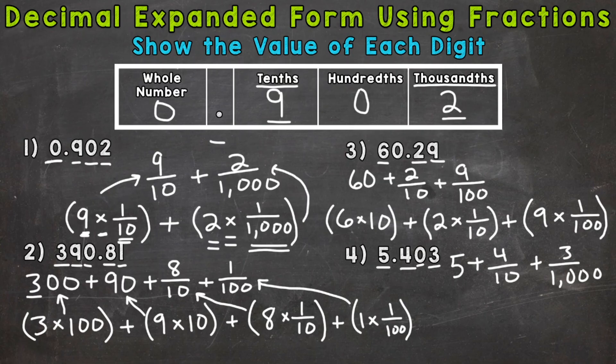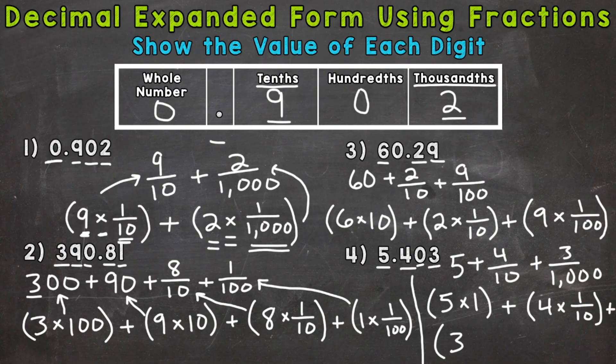All right, I'm going to try to squeeze this into the bottom right here. So we start with a five, let's separate these, five in the ones place, or five times one, plus a four times a tenth, so four in the tenths place, plus, I'm going to go to the next line down, we have a three in the thousandths place, or three times one thousandth.